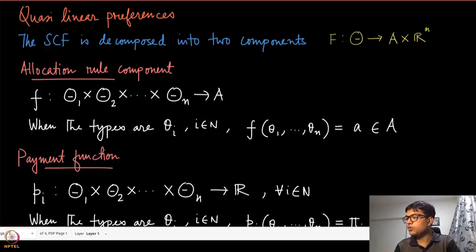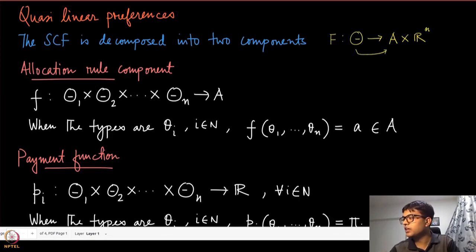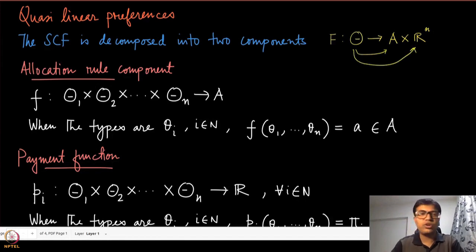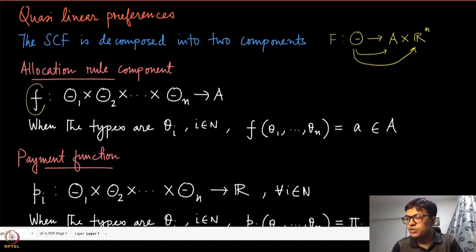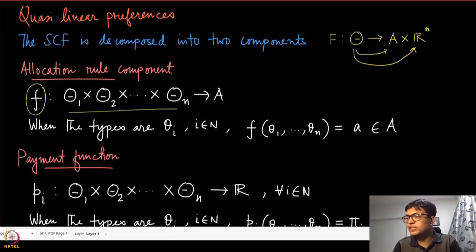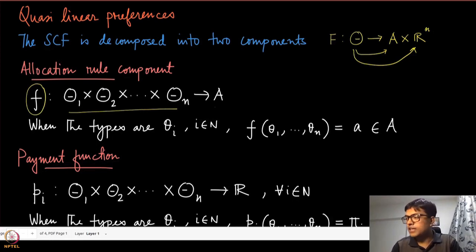We can decompose F into two parts: one function which maps theta into A, and the other component which maps theta into R^N. The first component is called the allocation rule, denoted with lowercase f. If each of the players report their types, it will take an allocation decision which will come from A.